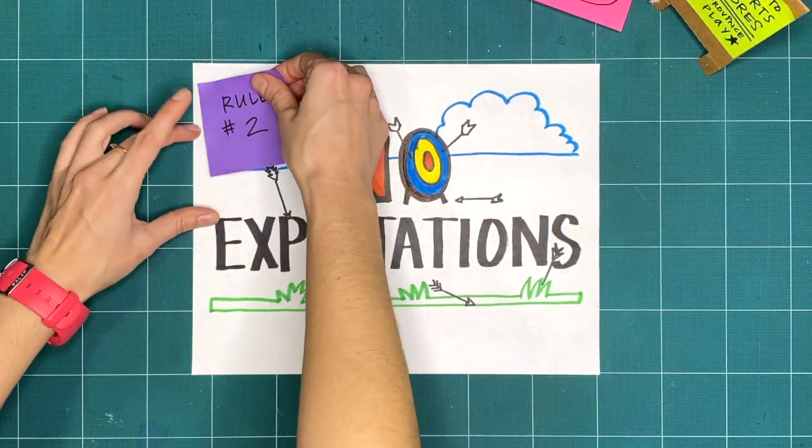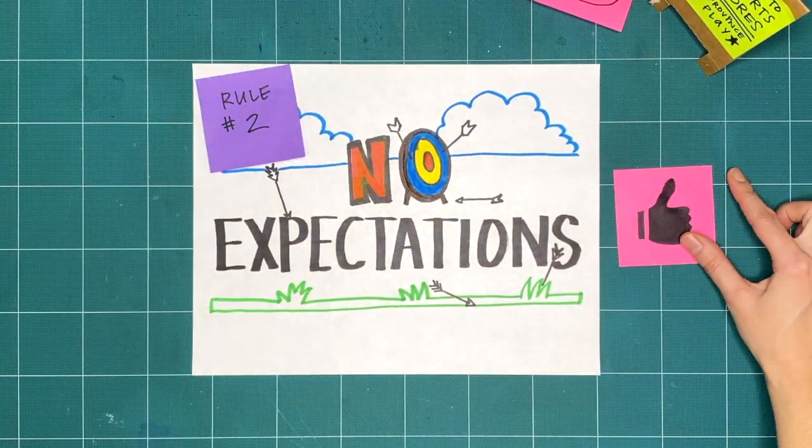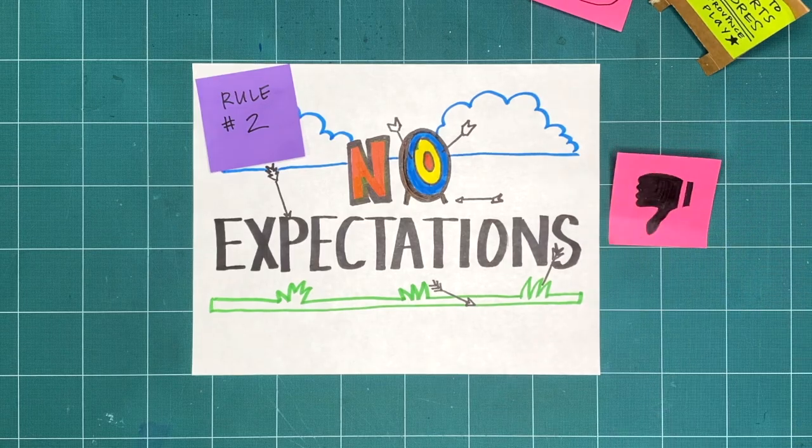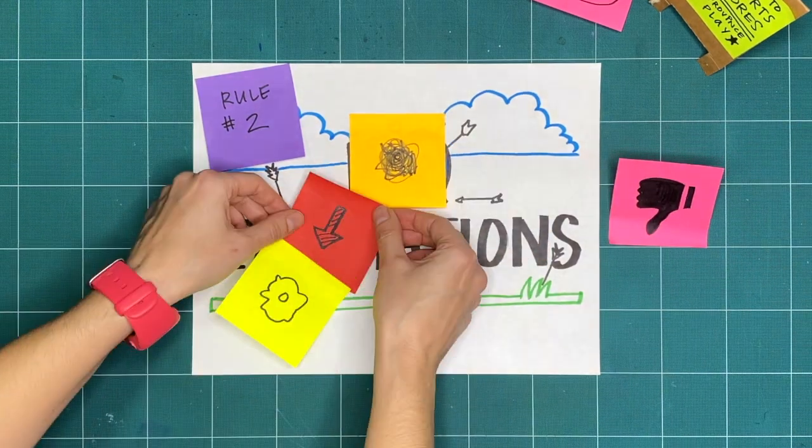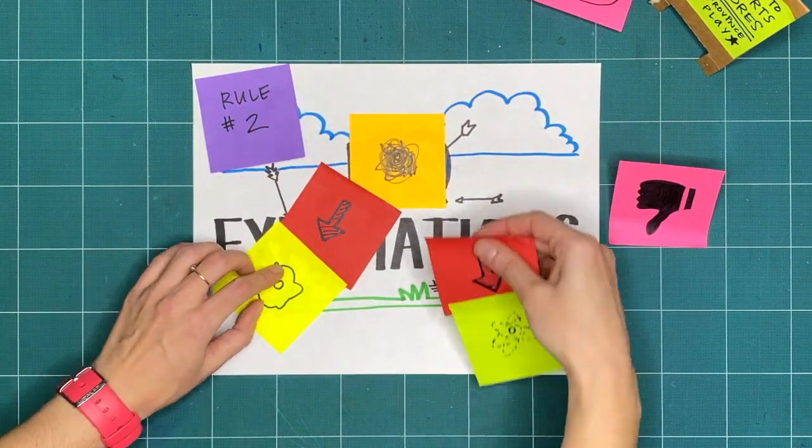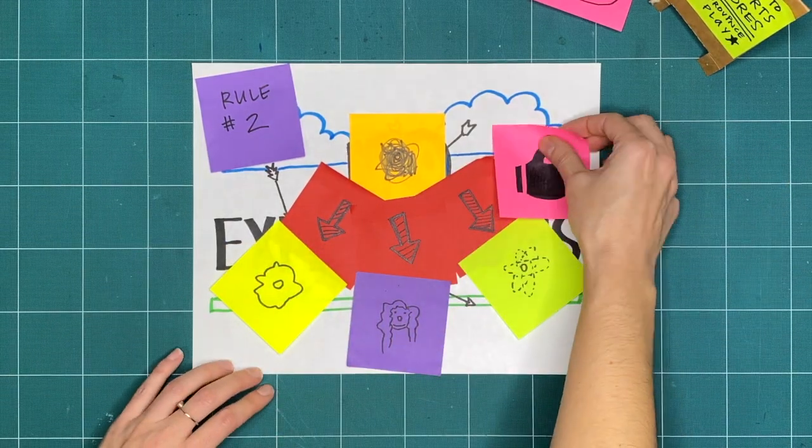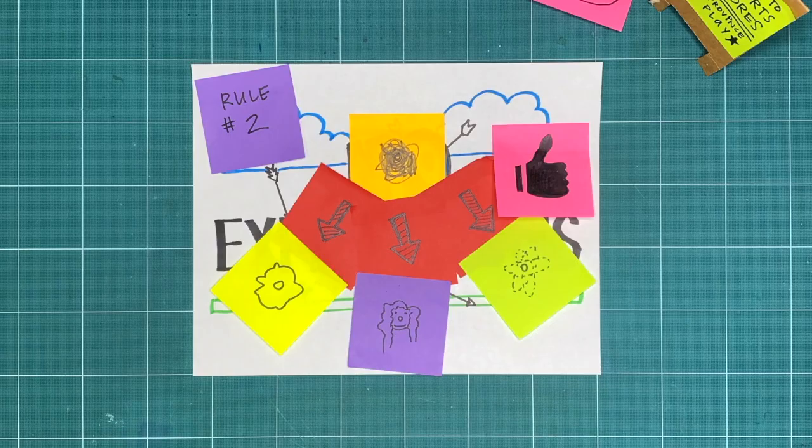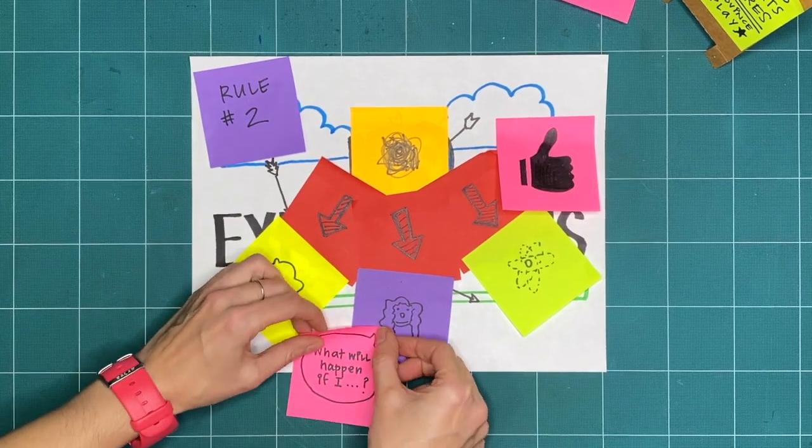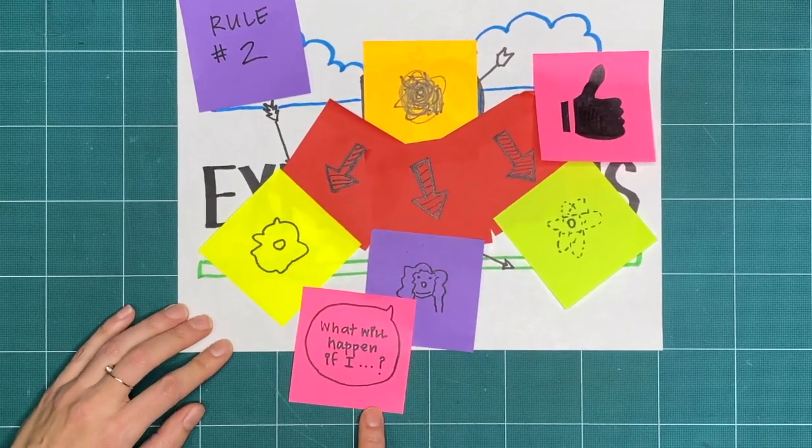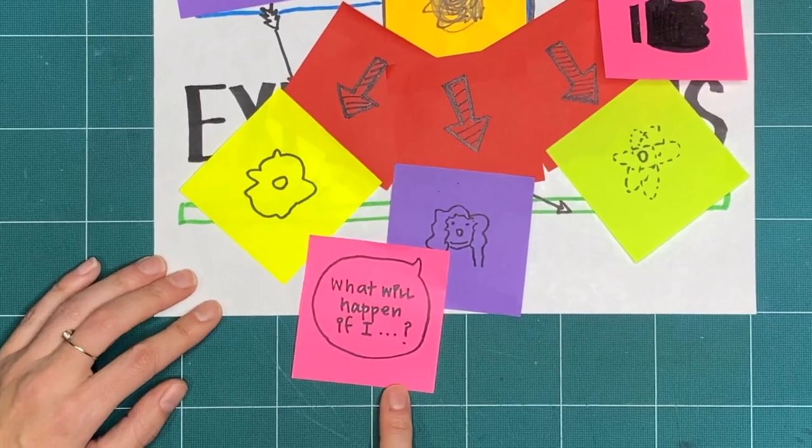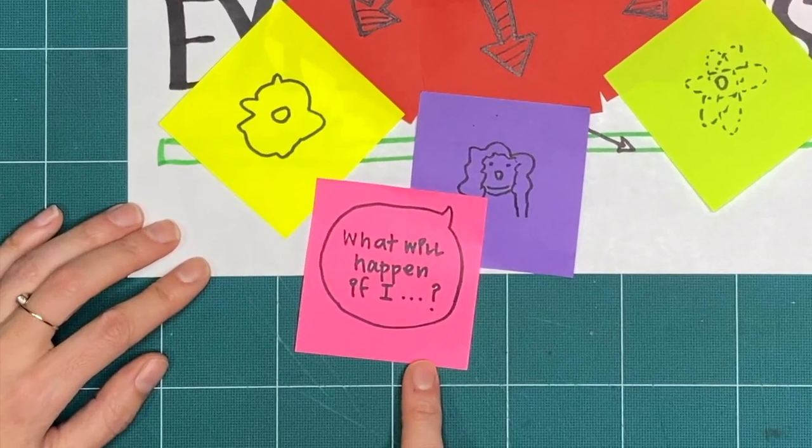Rule two is no expectations. If we're not expecting something to turn out good or bad, we're open to it going in a whole bunch of different ways. And that means that all respectful creative explorations are great, regardless of what it ends up looking like. Try to do things you've never tried before, and ask yourself, what will happen if I...